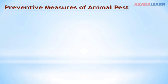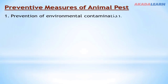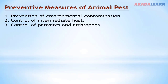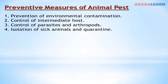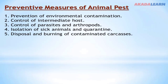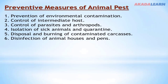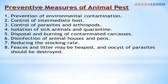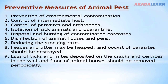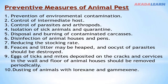Prevention measures of animal pests include: prevention of environmental contamination; control of intermediate hosts; control of parasites and arthropods; isolation of sick animals and quarantine; disposal and burning of contaminated carcasses; disinfection of animal houses and pens; reducing the stocking rate; heaping feces and litter so that oocysts or parasites are destroyed; periodically removing eggs of ticks and mites deposited on the surfaces, walls, and floors of animal houses; and dusting animals with iso-irozine and gama-zine, which are chemicals used for controlling parasites.